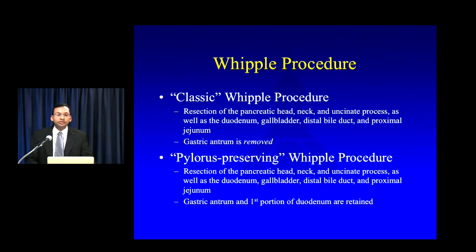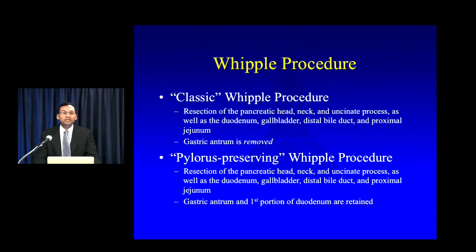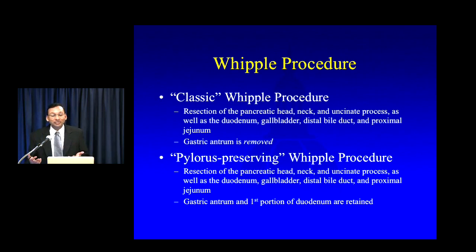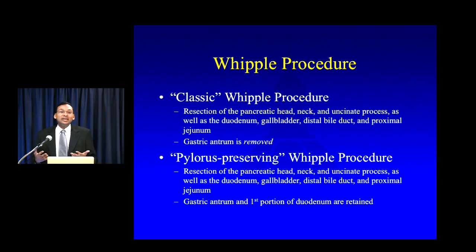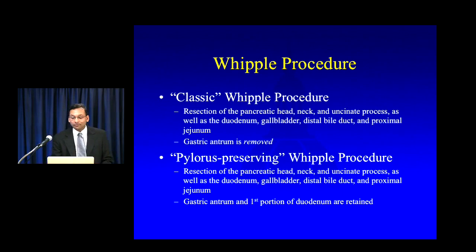The pylorus-preserving procedure was originally intended to reduce the risk of bile reflux, but there's a lot of data in the literature suggesting there's really not a lot of difference in patient outcomes between the classic and pylorus-preserving Whipple. At Hopkins, a lot of whether you get the classic or the pylorus-preserving Whipple is going to be based on your surgeon's preference and comfort level.